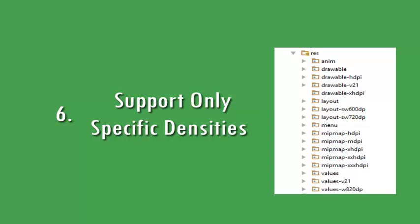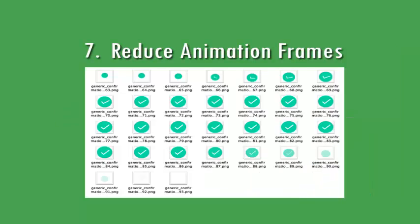Next point: support only specific densities. There are many densities available like ldpi, mdpi, and hdpi. Although Android supports all these densities, you don't need to export your assets to each and every density. As per your requirement, put scaled images in the appropriate folder — this will help you reduce APK size.